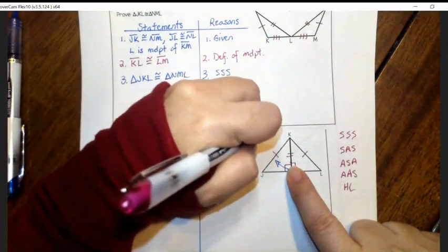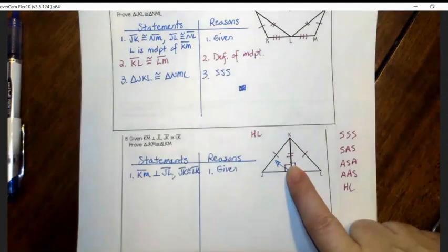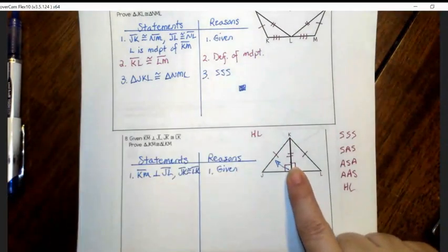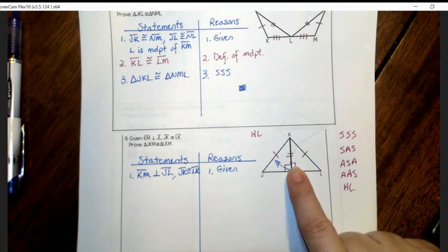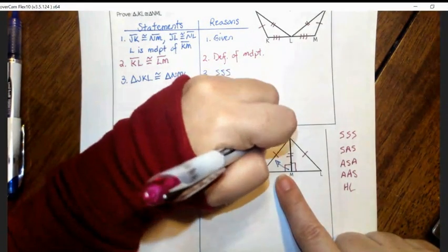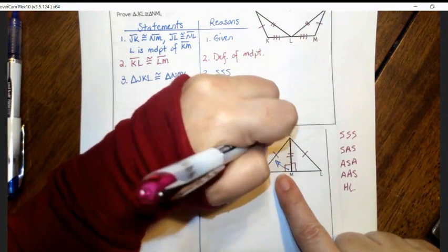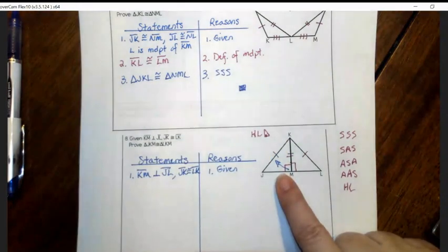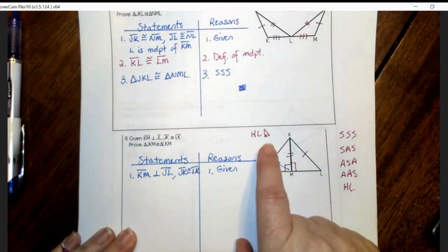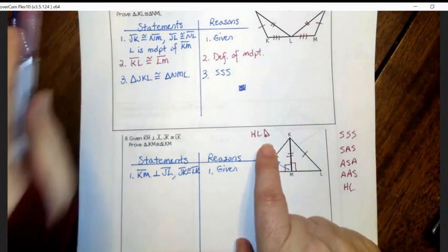So this one's a little different because I know it's only two letters. There's still three things you have to prove. You have to prove if the hypotenuses are congruent, the legs are congruent, and you also have to prove that it's a right triangle. So I'm going to write HL and then draw a little right triangle. So that's my to-do list of the three things I need in the proof.